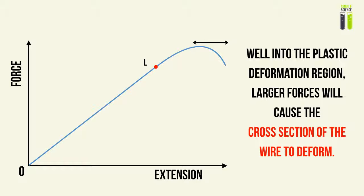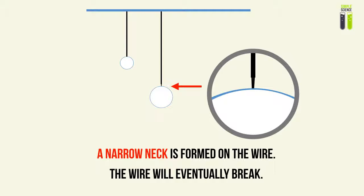So well into our plastic deformation region, what will happen is the larger forces will cause the cross section of the wire to deform. Now it's going to look something like this.